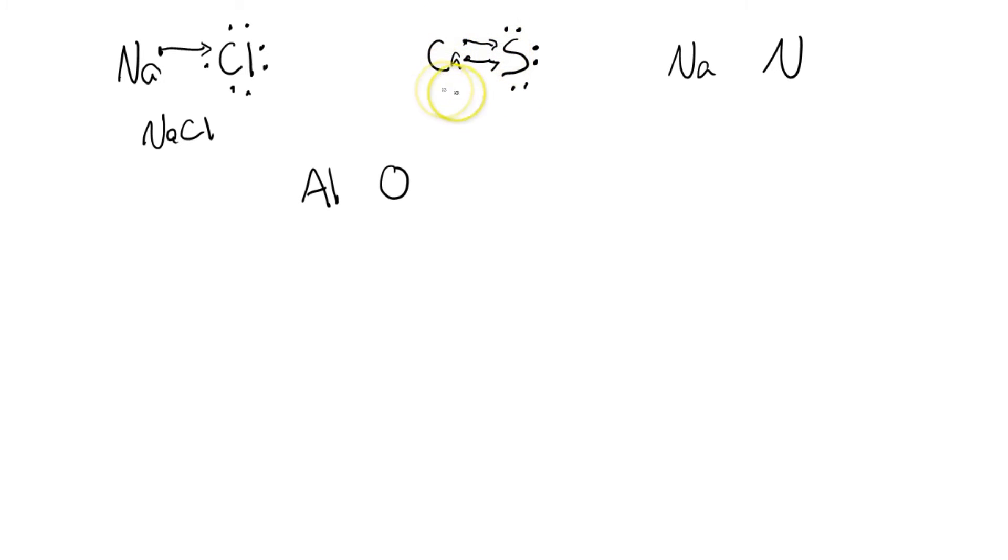So once again, we have a 1 to 1 ratio, and our formula is CaS. One of each.